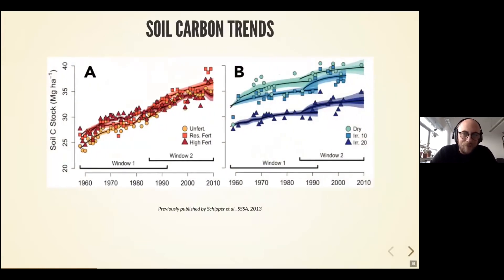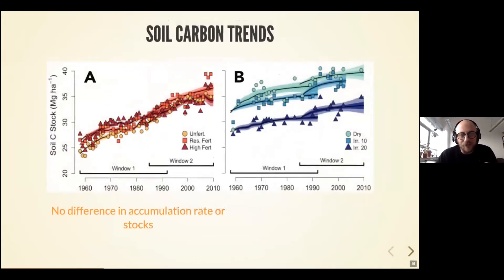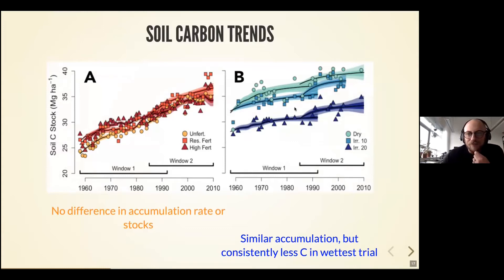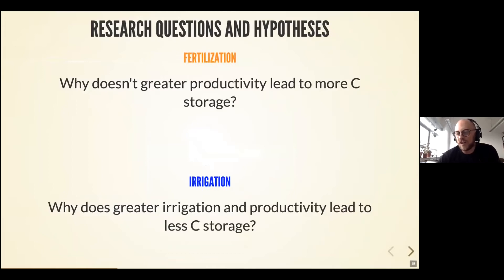Interestingly, that is not exactly the case. All the trials gained a significant amount of carbon over the entire duration of the experiment, but in the fertilized trials there was no difference in the rate or total stock of carbon over the entire experiment. All these sites gained carbon at the same rate despite very different inputs. In the irrigated trials, the rate of accumulation is also the same for each trial, but there's a significant amount of missing carbon in the most intensively irrigated site. Some amount of carbon that either has not been recovered due to a disturbance early on or has just not accumulated over time. With this data already available, we then asked what is actually causing these observed effects.